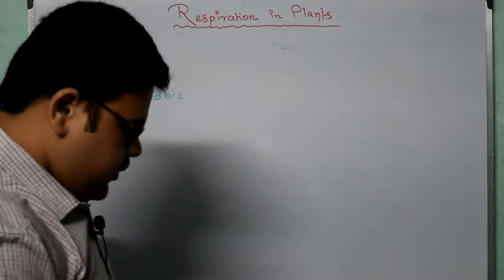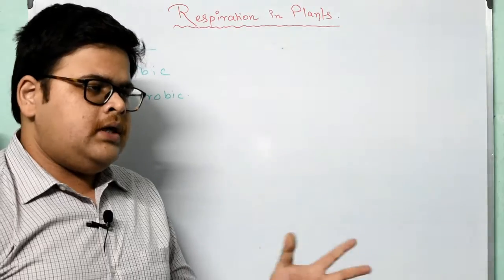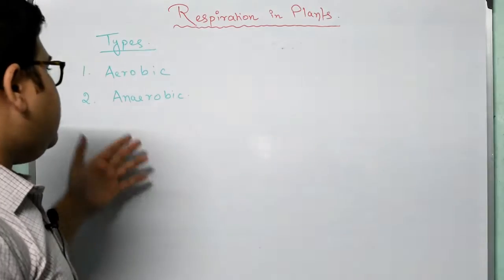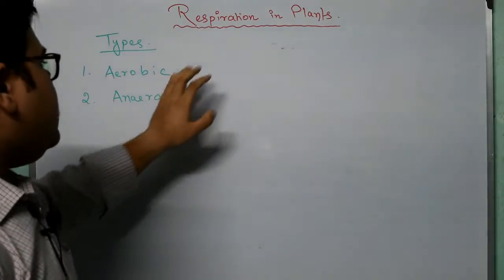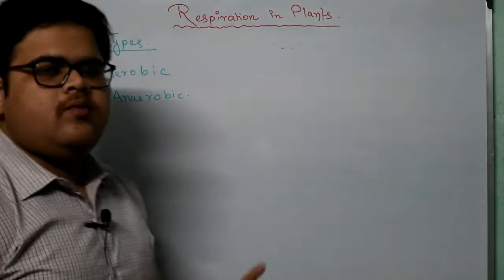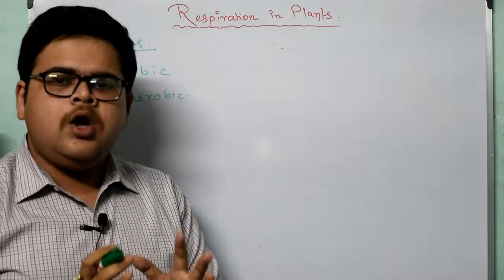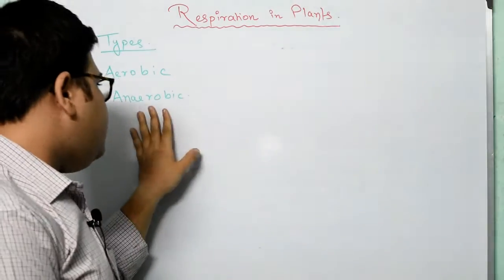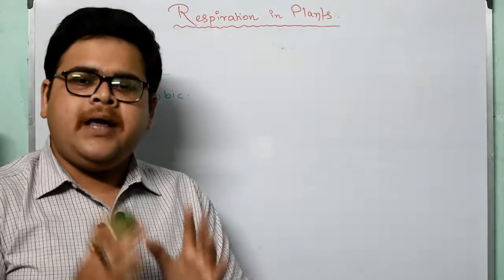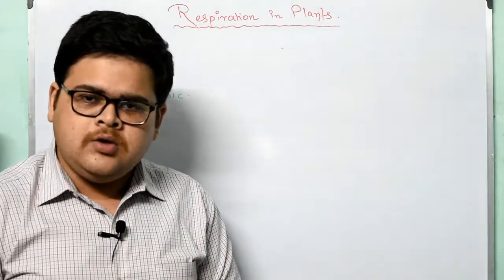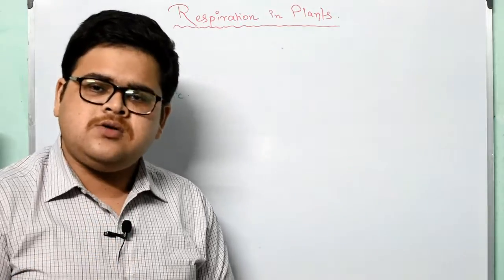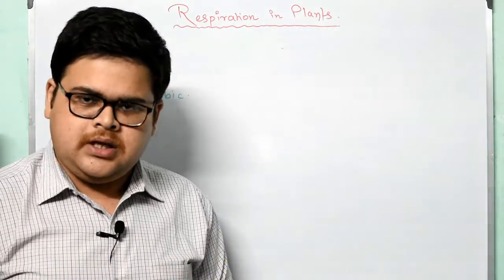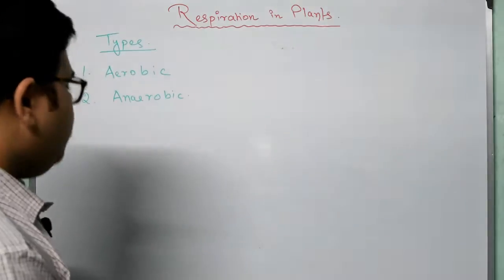I have already discussed aerobic and anaerobic respiration in my previous lecture. What is aerobic respiration and what is anaerobic respiration? Aerobic respiration is the respiration where the breaking up of the glucose molecule takes place in the presence of oxygen. Anaerobic respiration is the breaking up of the glucose molecule in the absence of oxygen. Now we will be learning in a bit more detail about both of these.